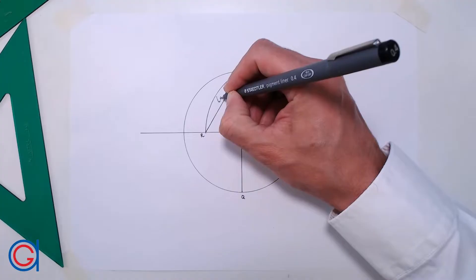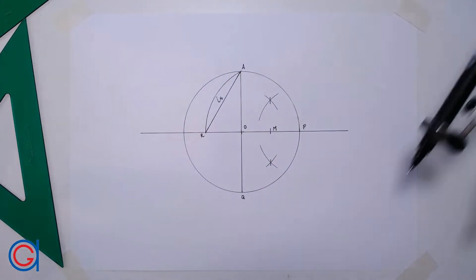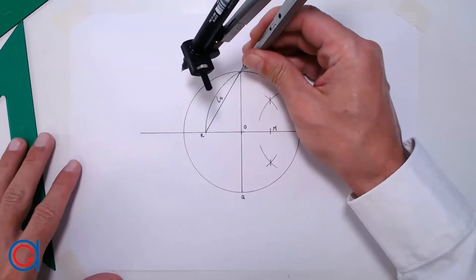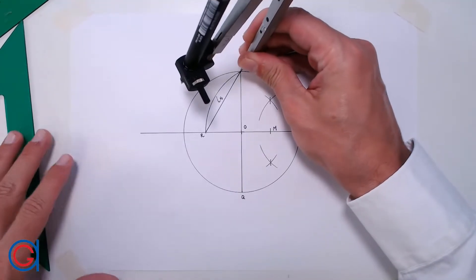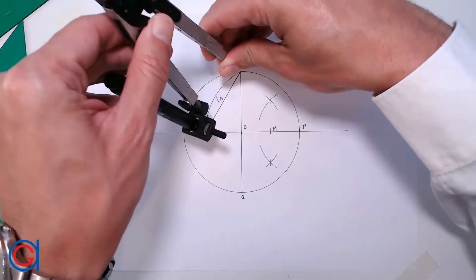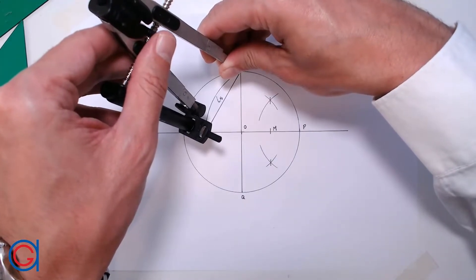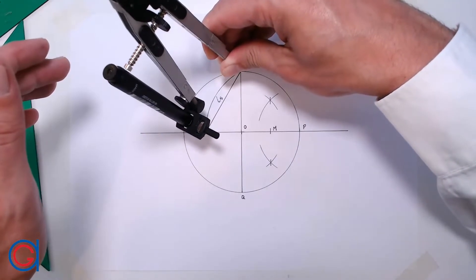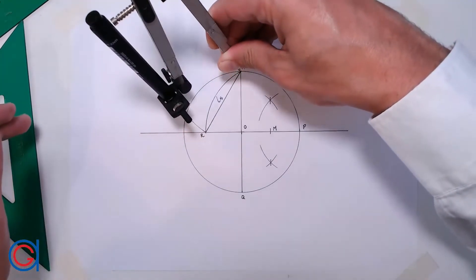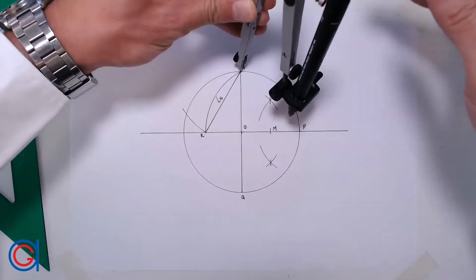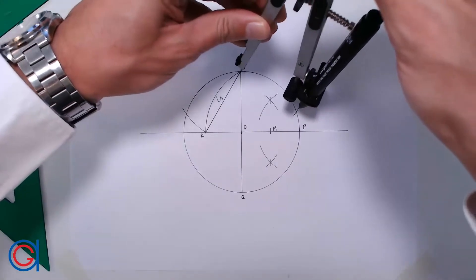So the next step is, with our compass, we want to transport our side L onto the circumference five times, starting at point A. So setting our compass to the length L, we scribe our first arc, on the left and on the right.